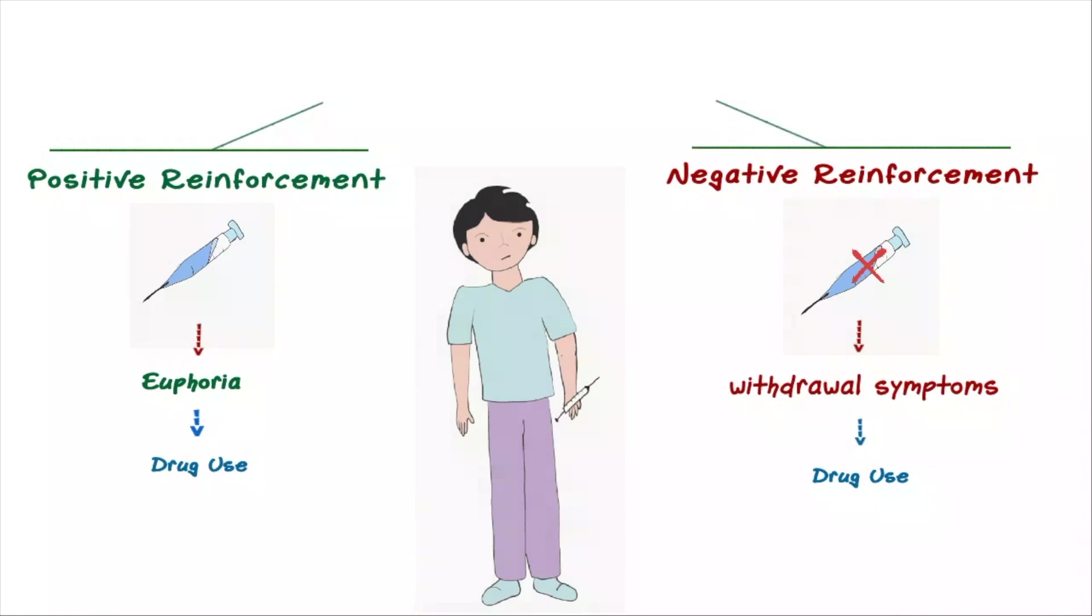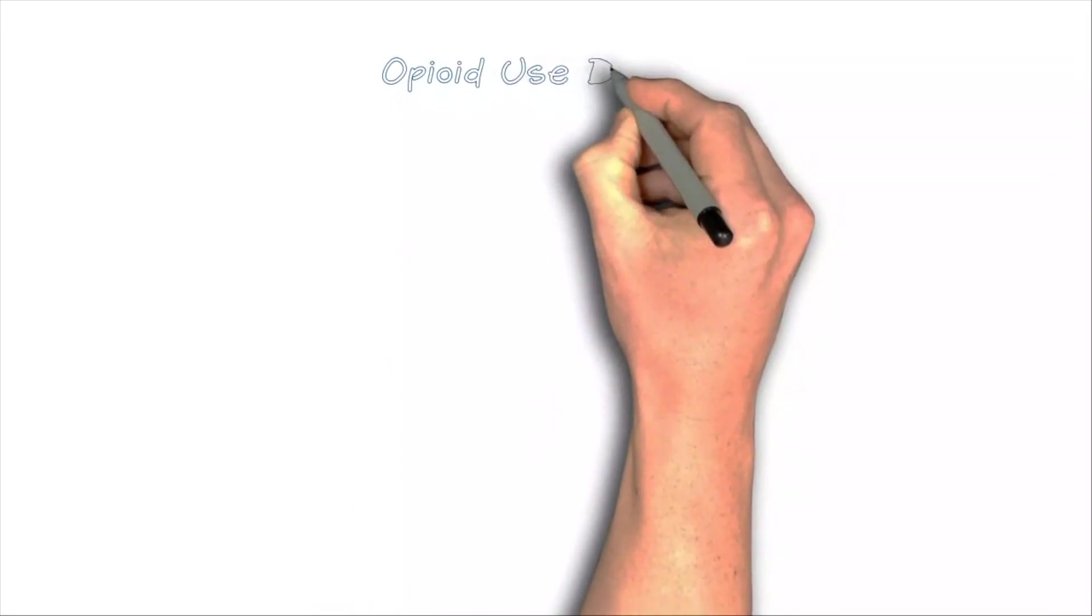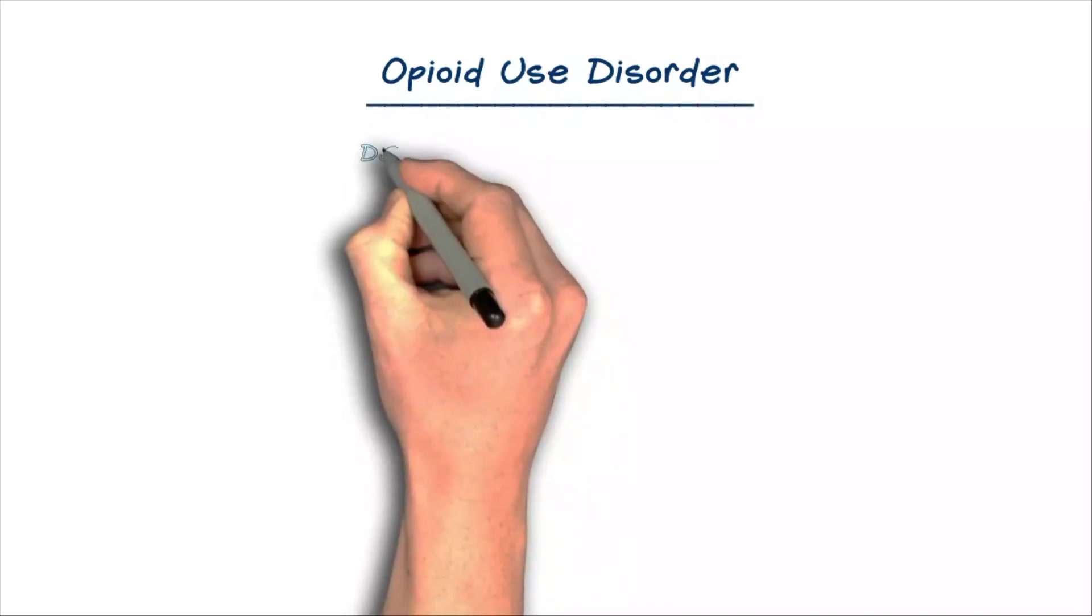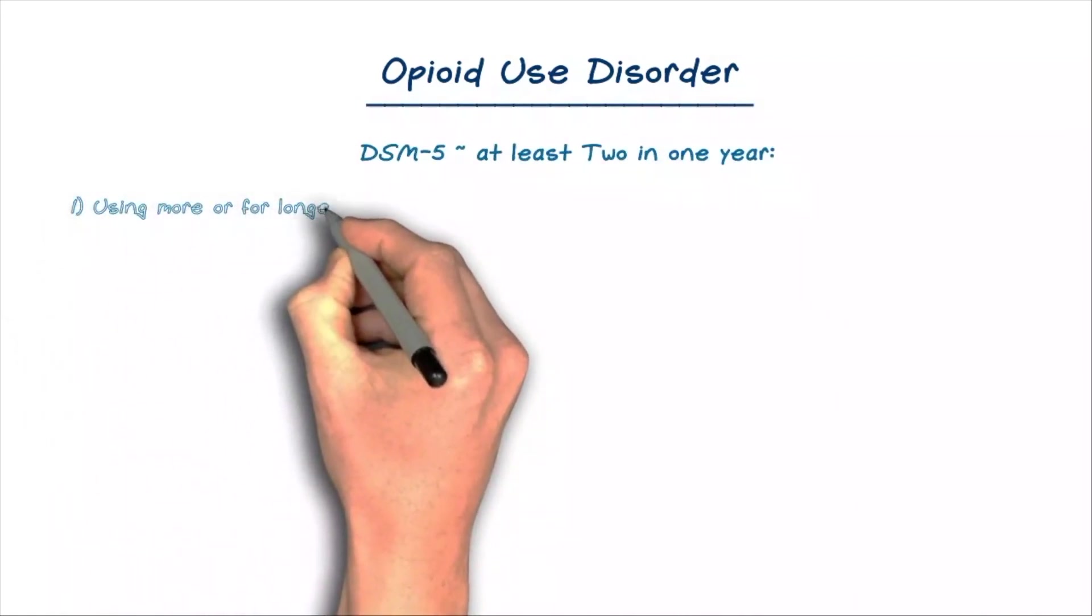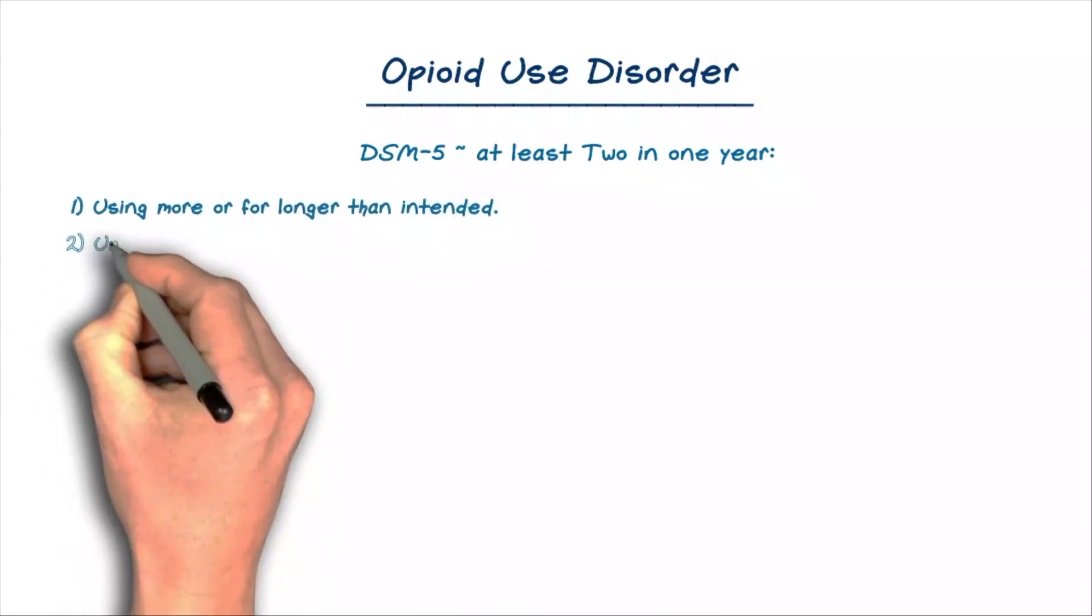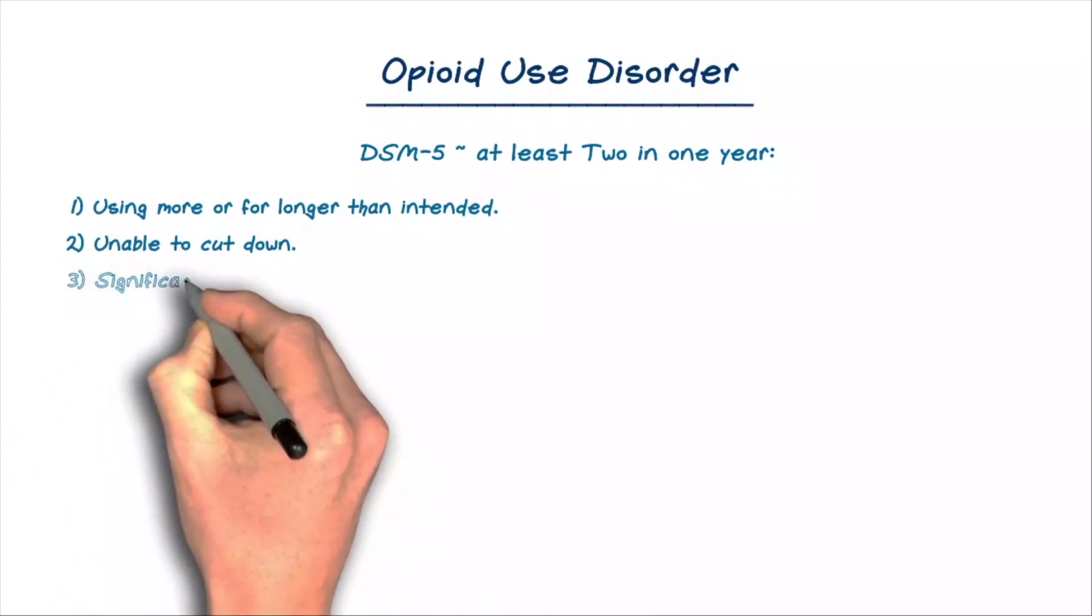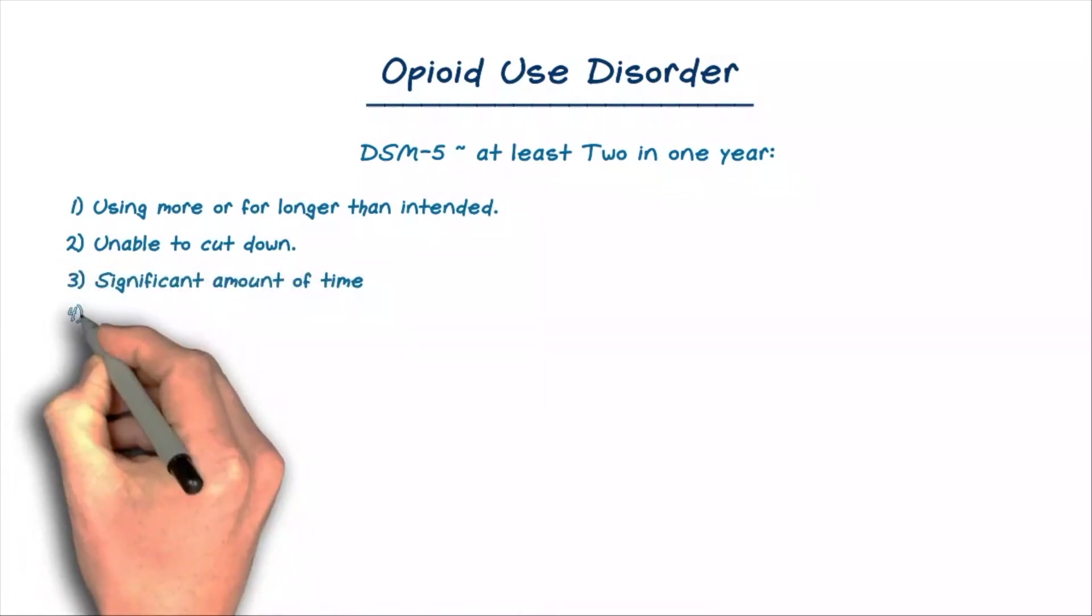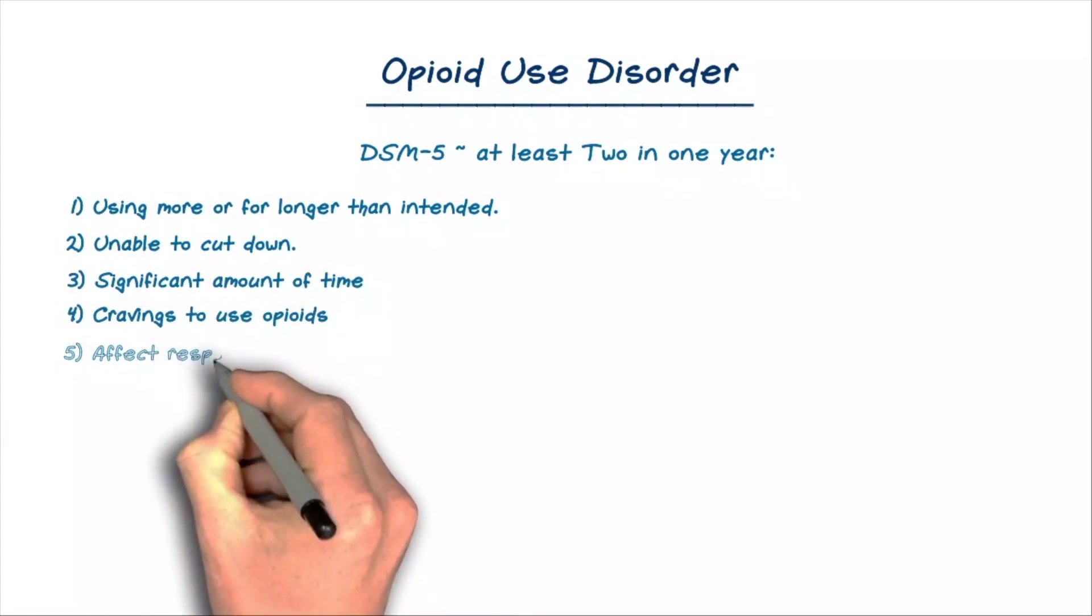The DSM-5 or Diagnostic and Statistical Manual, the fifth edition, defines opioid use disorder as causing at least two of the following behavior patterns within a year. First, using more opioids or using them for longer than intended. Second, being unable to cut down on the use of opioids. Third, having opioid use take up a significant amount of time. Fourth, having cravings to use opioids. Fifth, having opioid use affect responsibilities at work, school, or home. Sixth, using opioids even if they cause recurrent interpersonal problems.